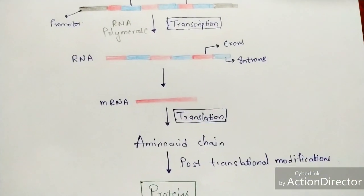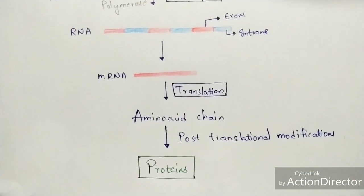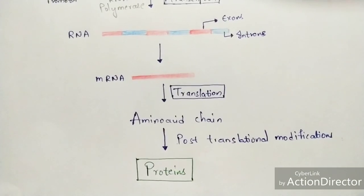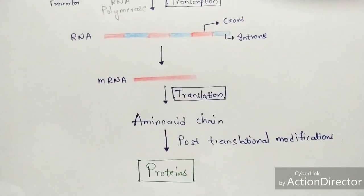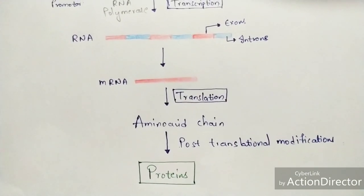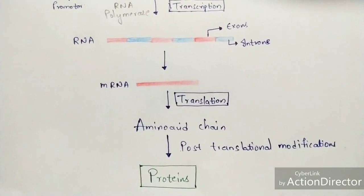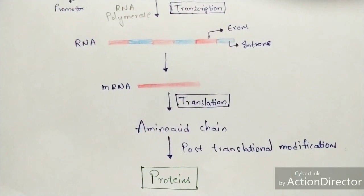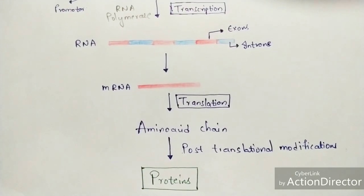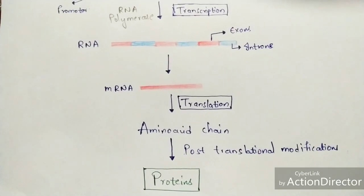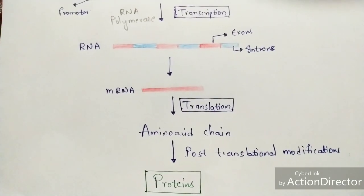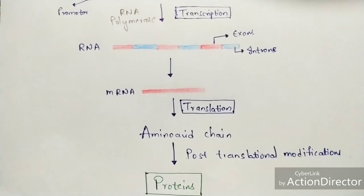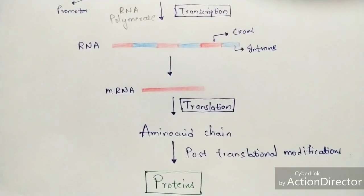The mRNA undergoes translation and forms an amino acid chain, and finally proteins are formed through post-transcriptional modifications. Notes on the nucleus will be given in the WhatsApp group — the invitation link is in the description box. Thank you for watching; if you like this video, please like and subscribe, and comment in the comment box if you have any questions.